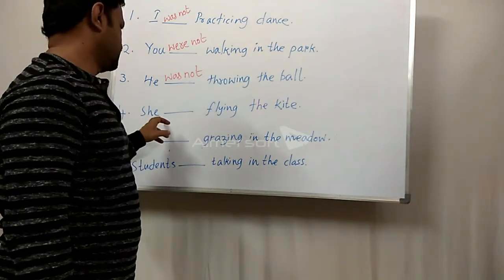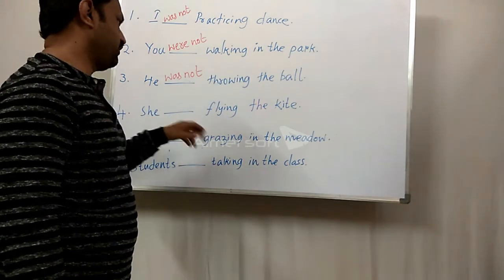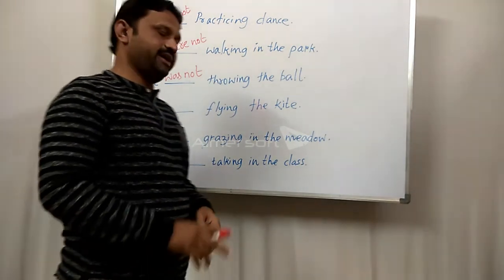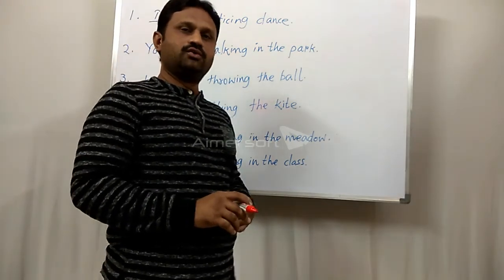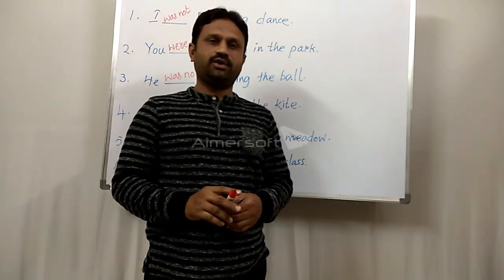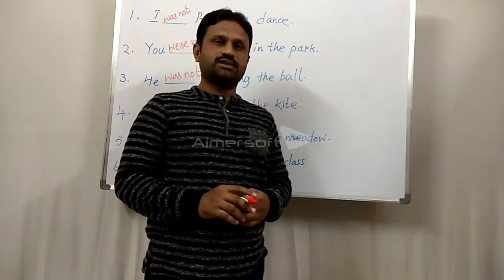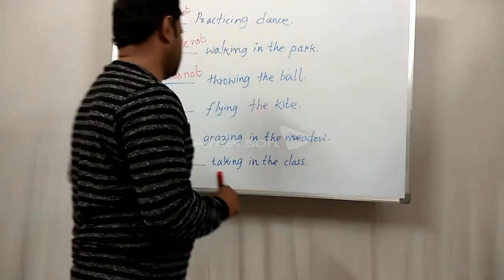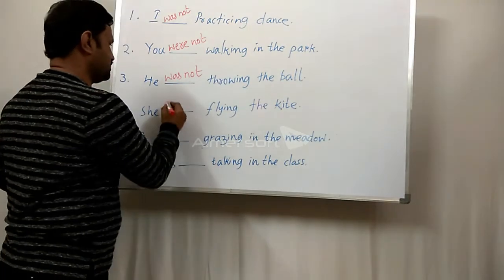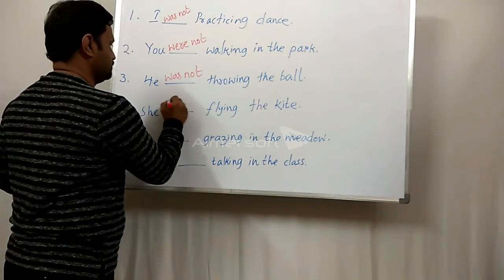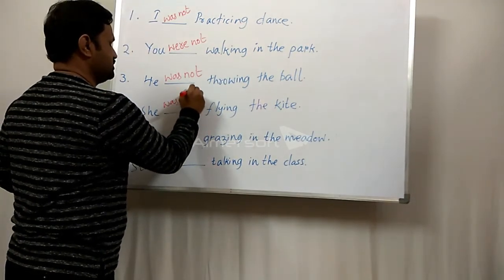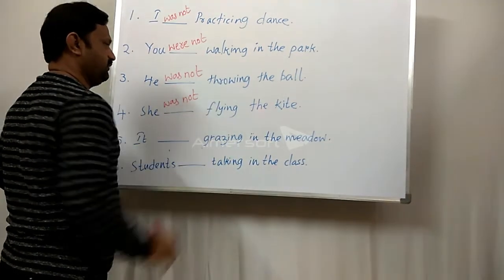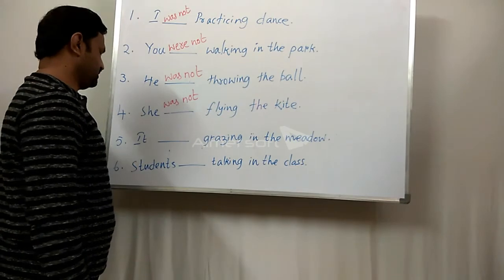Fourth sentence: 'She dash flying the kite.' 'She' takes the helping verb 'was.' So the answer is: 'She was not flying the kite.'